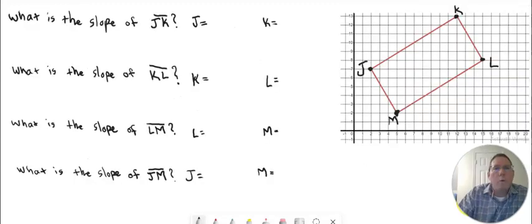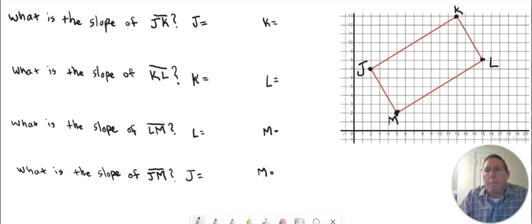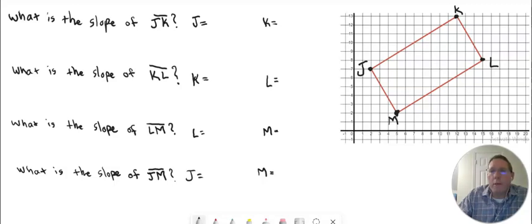Let's do another example. Here we have another quadrilateral — a four-sided figure on the coordinate plane made up of four lines, and because they are lines on the coordinate plane, they have slope. This four-sided figure is called J, K, L, M. We want to identify the slope of JK, then KL, then LM, and then JM — we're going to identify four slopes.